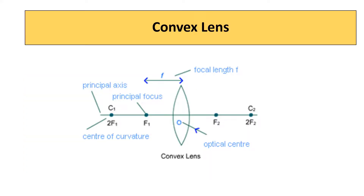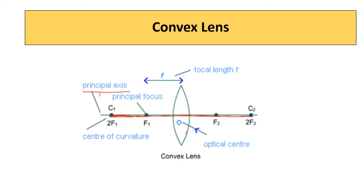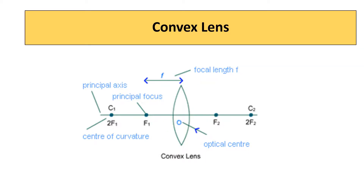This is a diagram of a convex lens bounded by two spherical surfaces. As there are two spherical surfaces, there are two centers of curvature C1 and C2, and two focal points F1 and F2. The line joining C1 and C2 is called the principal axis. The distance between the optical center and the focus is called the focal length, F. Note that this convex lens bounded by two spherical surfaces has two focal points and two centers of curvature.